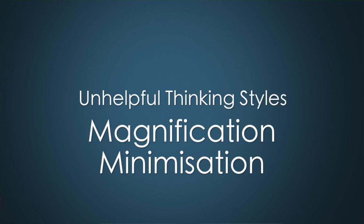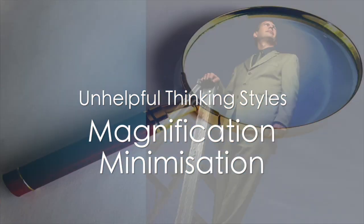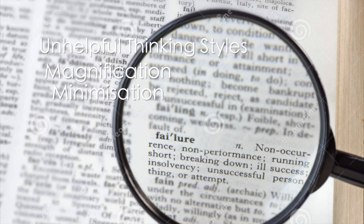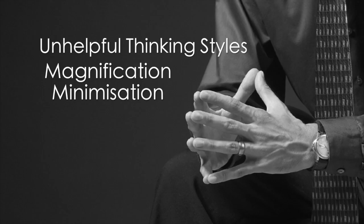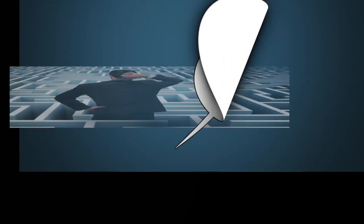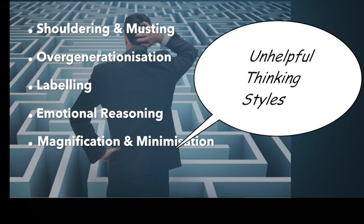Magnification and Minimisation: In this thinking style, you magnify the positive attributes of other people and minimise your own positive attributes — it's as though you're explaining away your own positive characteristics or achievements as though they're not important. Note that some of these styles might sound similar to one another. They're not meant to be distinct categories, but to help you see if there's a kind of pattern to your thoughts. Just choose a few that might be most relevant to you.